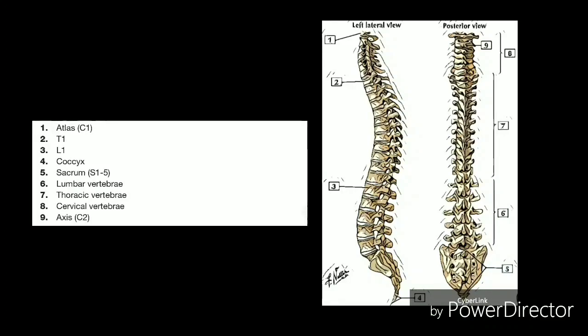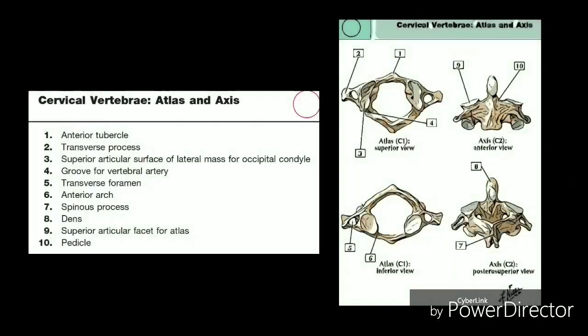The first vertebra, C1, is the ring-shaped atlas that connects directly to the skull. This joint allows for the nodding or yes motion of the head. The second vertebra, C2, is the peg-shaped axis.